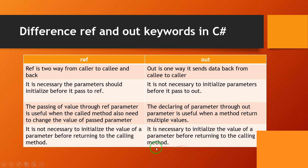These are the differences between the ref and out keywords in C#. If you have any queries, you can write in the comment section.